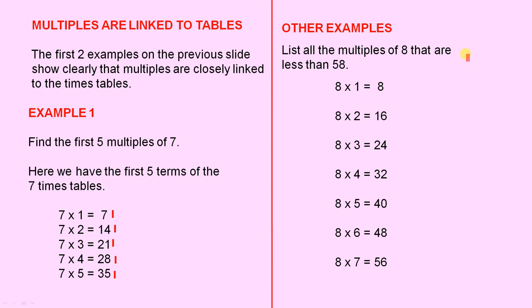Other examples. List all the multiples of 8 that are less than 58. So 8 times 1 is 8. 8 times 2 is 16. 8 times 3 is 24.